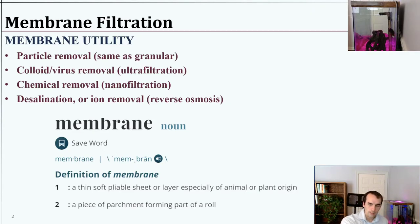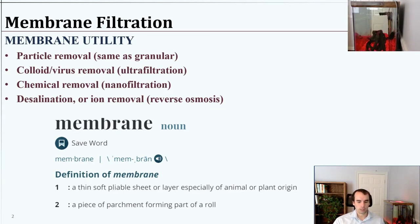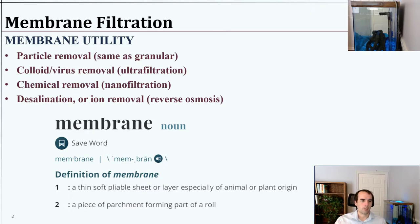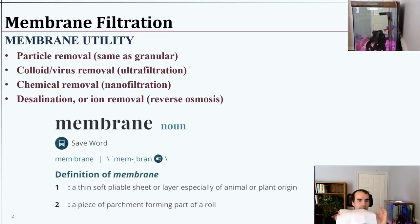A membrane is defined as a thin, soft, pliable sheet or layer, especially of some plant or animal origin, that serves as a thin boundary. Another definition would be a piece of parchment forming part of a roll. Think of a piece of paper — it's fairly flat, pliable, we can fold and bend it without it breaking or shattering. Those are the general characteristics.